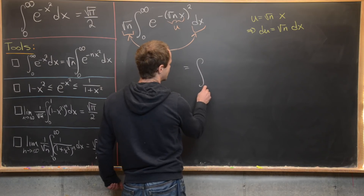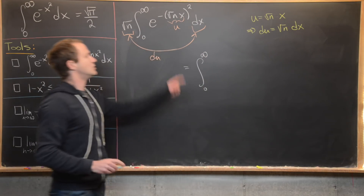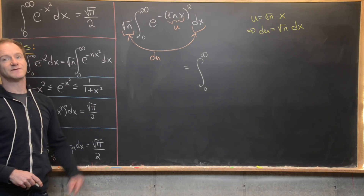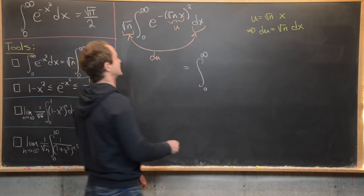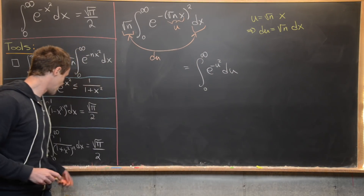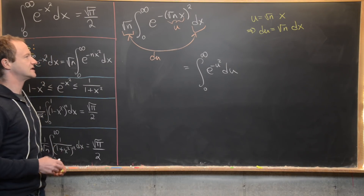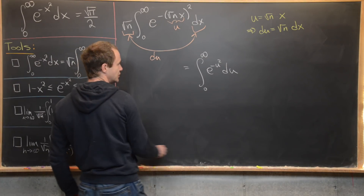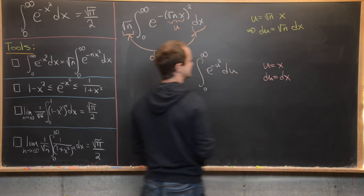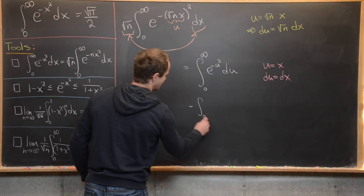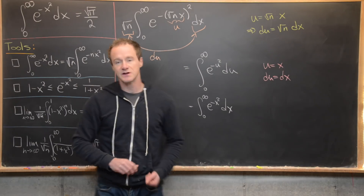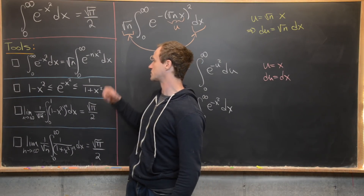After substitution, we get the integral from 0 to infinity of e to the minus u squared du — since when x equals 0, u is also 0, and when x approaches infinity, u also approaches infinity. A trivial re-labeling u equals x gives the integral from 0 to infinity of e to the minus x squared dx, establishing this first tool.